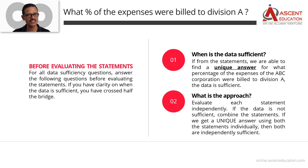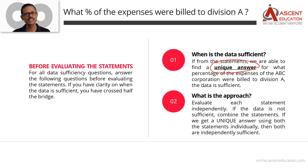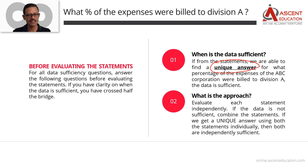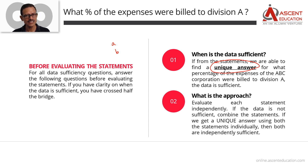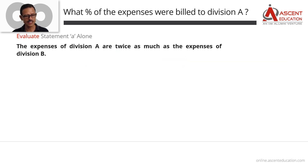What is the question asking us to find out? It's asking us to find the percentage of expenses billed to Division A. The data is sufficient only when we arrive at a unique value for that percentage. Our approach: evaluate Statement A first, then Statement B, and check how many statements are sufficient.